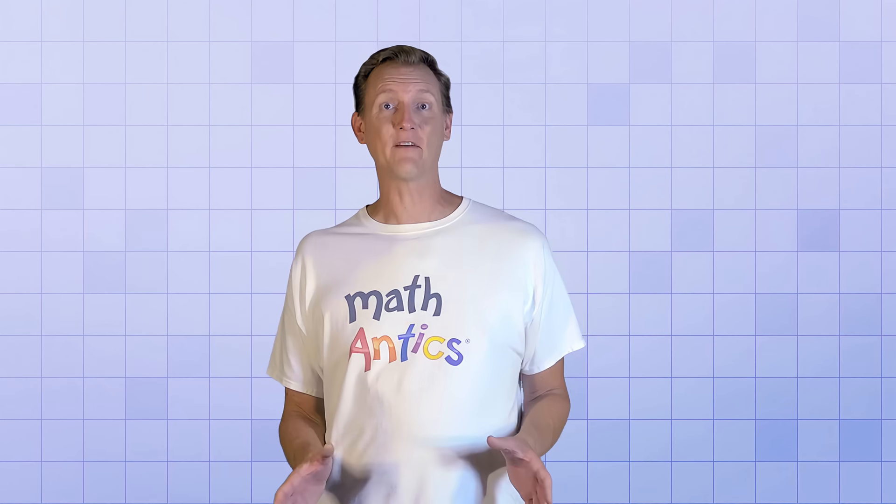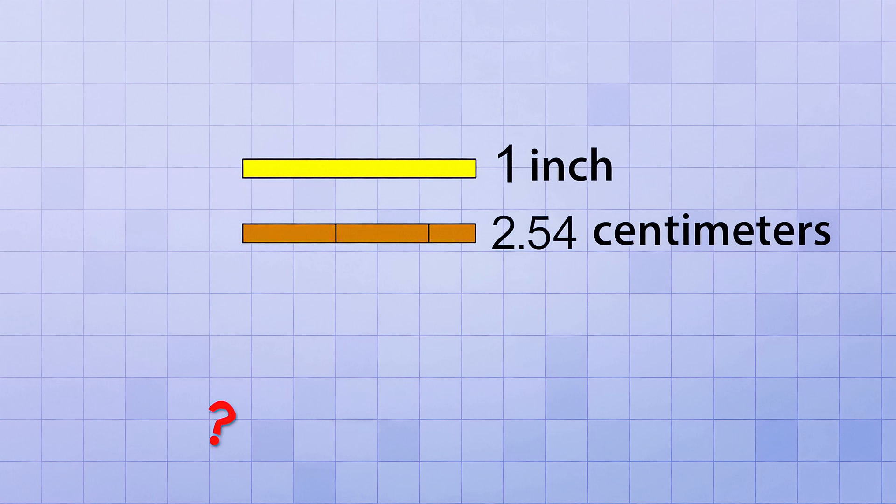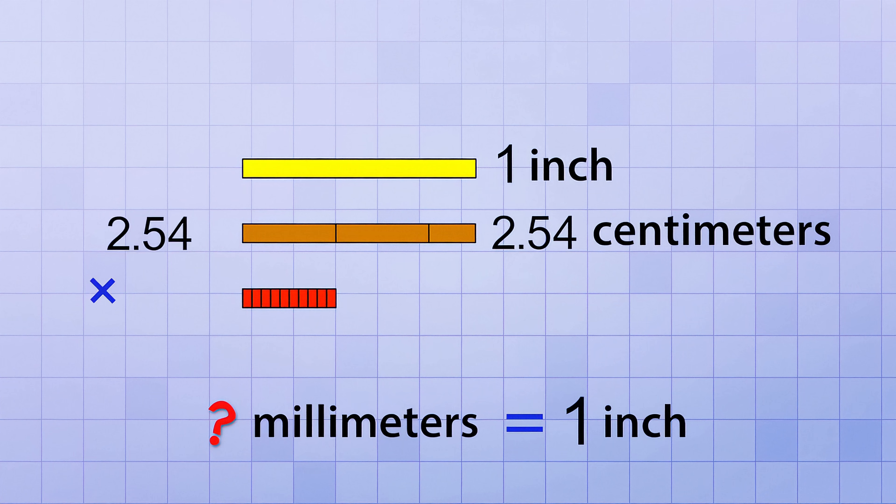Ok, so now that you have a better idea about the size of the most common traditional and metric units of distance, let's do some side-by-side comparisons so you get a better feel for how these units relate to each other. Again, let's start with an inch. We already learned that an inch is the same distance as 2.54 centimeters, right? So how many millimeters would be equal to an inch? Well, since there's exactly 10 millimeters in each centimeter, all we have to do is multiply 2.54 by 10, and we see that there are 25.4 millimeters in an inch.